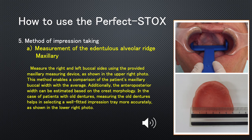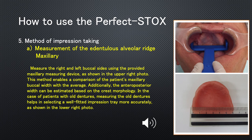Method of Impression Taking. A. Measurement of the Edentulous Alveolar Ridge — Maxillary: Measure the right and left buccal sides using the provided maxillary measuring device, as shown in the upper right photo. This enables comparison of the patient's maxillary buccal width with the average. Additionally, the anteroposterior width can be estimated based on the crest morphology. For patients with old dentures, measuring the old dentures helps in selecting a well-fitted impression tray more accurately, as shown in the lower right photo.